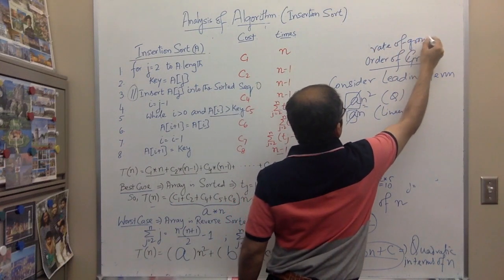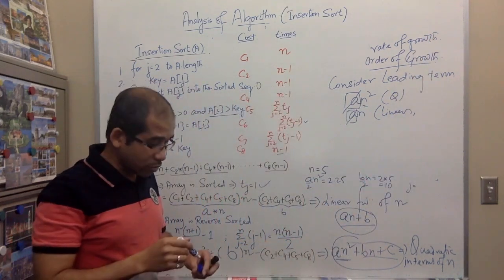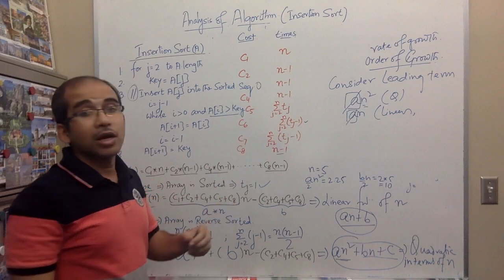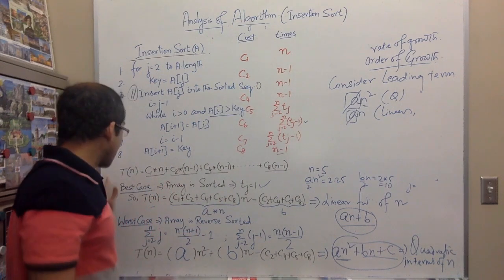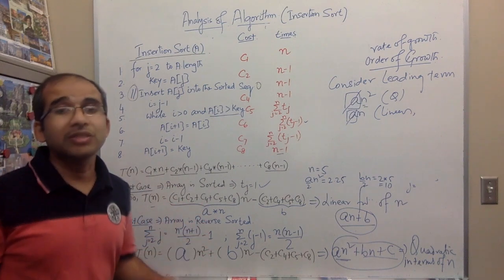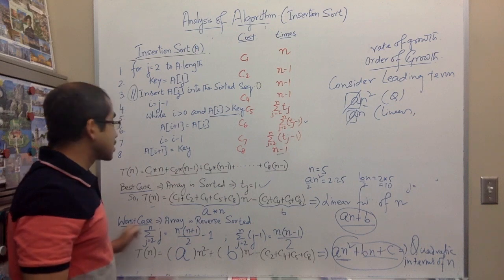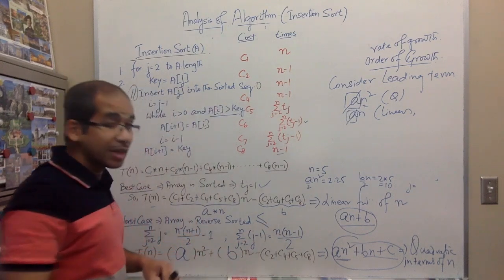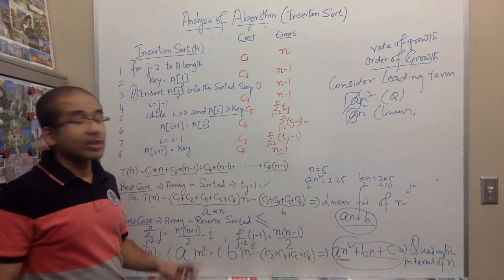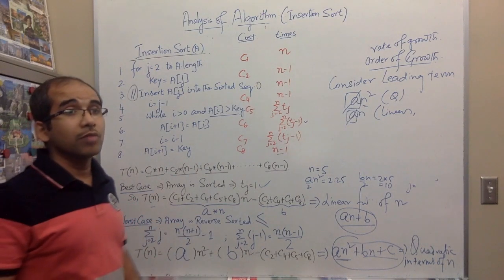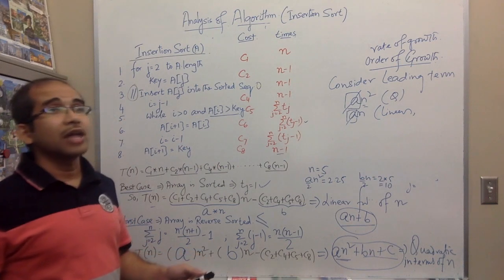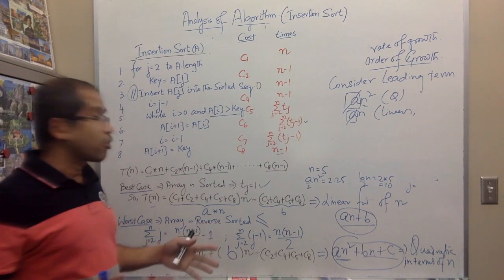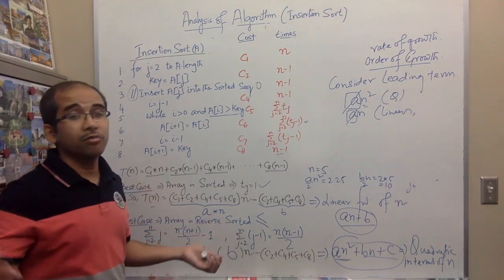The execution of an algorithm is measured by its order of growth. Importantly, best case analysis is a bogus analysis - it doesn't give you meaningful information. What matters is the worst case, because the worst case is an upper bound. Knowing the worst case tells you this algorithm will not take more than a certain amount of time, regardless of what input you provide.